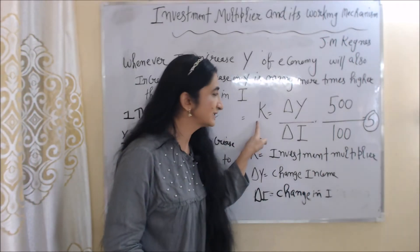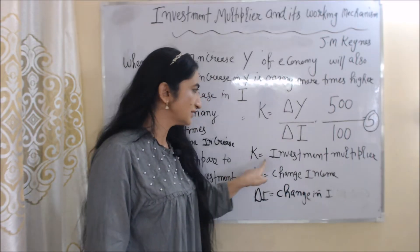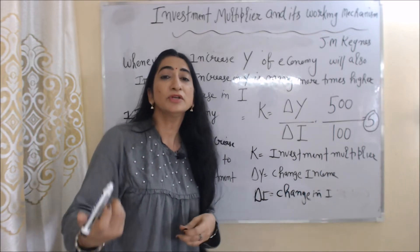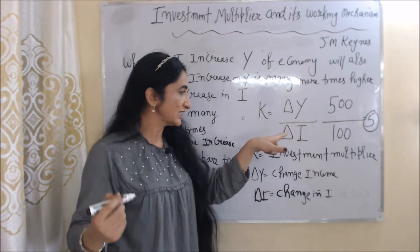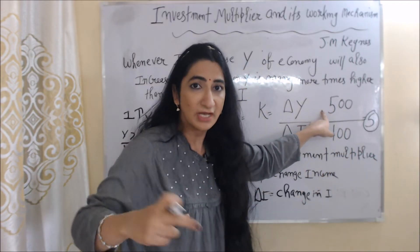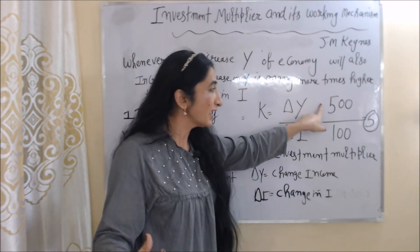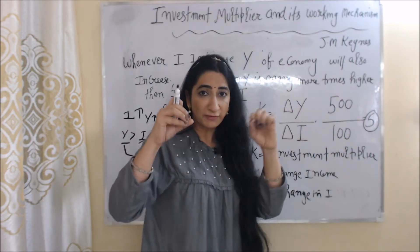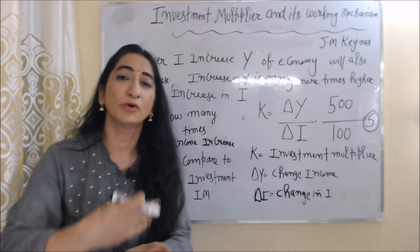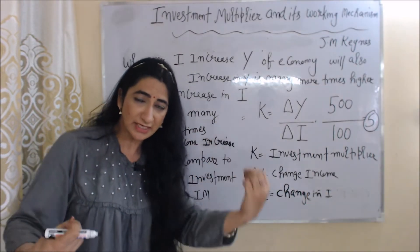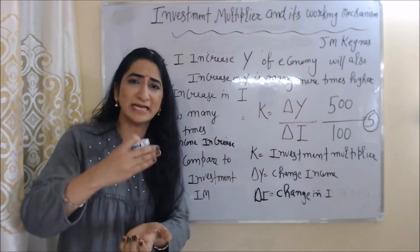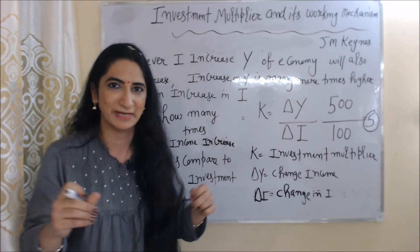The formula of investment multiplier is K = ΔY / ΔI, where K is the investment multiplier, ΔY is change in income, and ΔI is change in investment. Suppose we do new investment of 100 crore, so our change in investment is 100 crore. Due to this investment, our income increased by 500 crore, so change in income is 500 crore. 500 over 100 equals 5 — this 5 is our investment multiplier, saying income increased five times higher than investment.